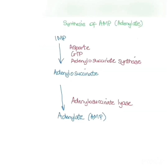IMP is also used in the synthesis of AMP. Aspartate donates an amino group while GTP is the energy source. This differs from the synthesis of GMP, where glutamine was the amino source and ATP was the energy source. Adenylosuccinate synthase converts IMP to adenylosuccinate, and through a lyase enzyme forms AMP.